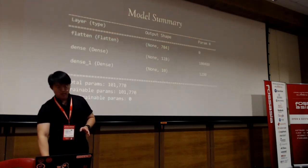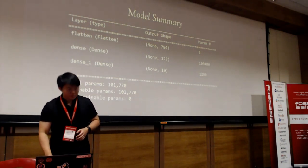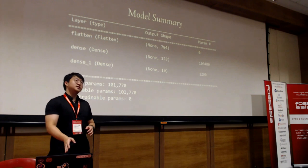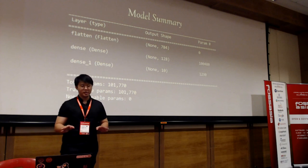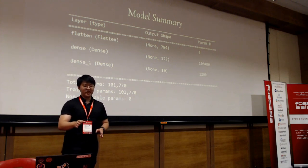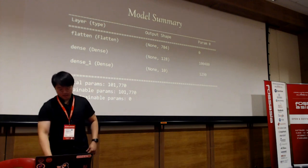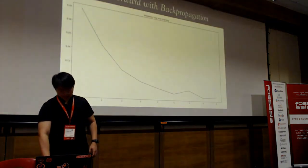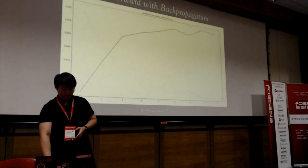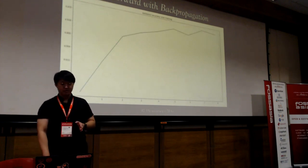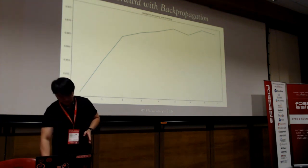Let's look at the coding part. This is a simple model summary in TensorFlow for classifying the MNIST dataset. It achieves 97.5% validation accuracy in 21.1 seconds — pretty good performance.